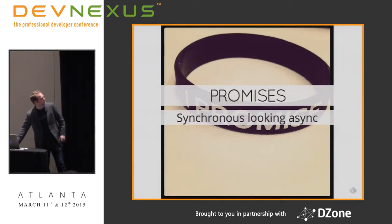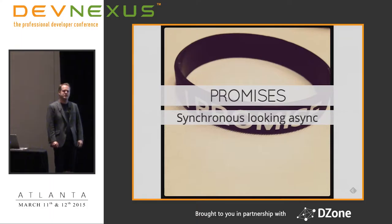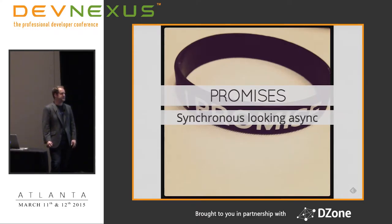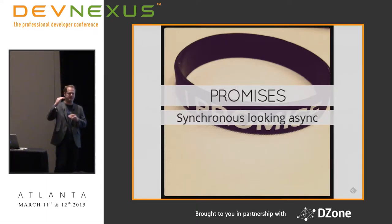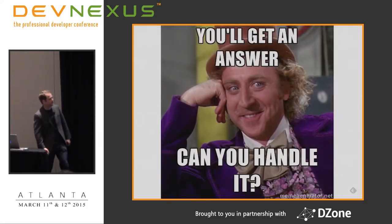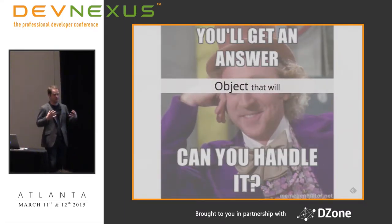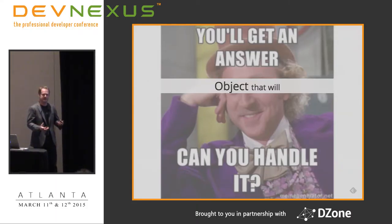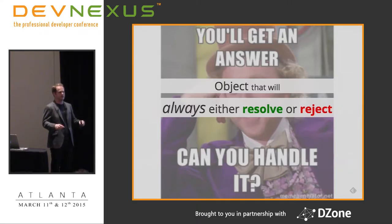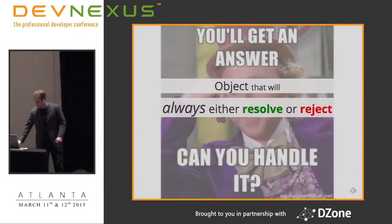Promises get a lot of hype right now - they just got added to ES6 so they'll be part of the JavaScript spec going forward. The biggest thing people appreciate is that promises code looks synchronous. By definition, a promise is an object - not a function - that always either resolves or rejects, and can only do one or the other once. After that first resolution or rejection, it won't change.